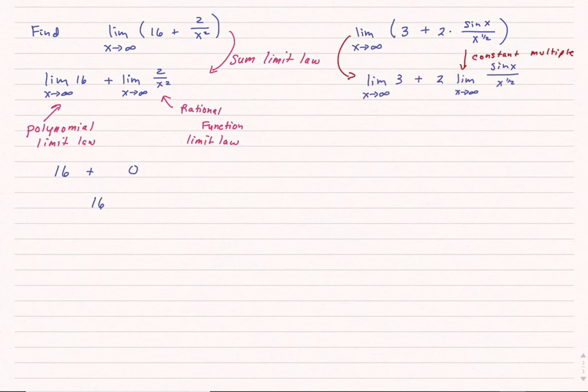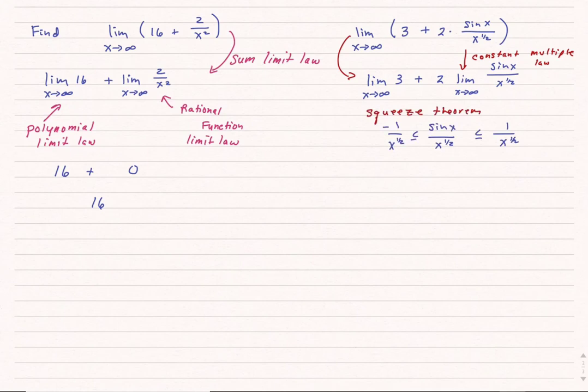For the second example, I use the same sum limit law and the constant multiple law to pull the two out. For the sine x over square root of x term, I need to use the squeeze theorem. I know the largest value sine can be is 1 and the lowest is negative 1, so negative 1 over square root of x is less than or equal to sine x over square root of x, which is less than or equal to 1 over square root of x.